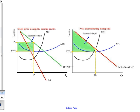So first thing here, the single price monopoly is on your left. The price discriminating monopolist is on your right. Pretty standard stuff here.